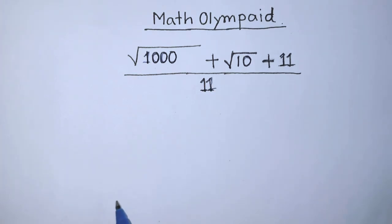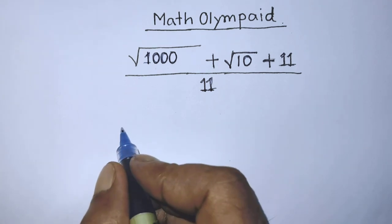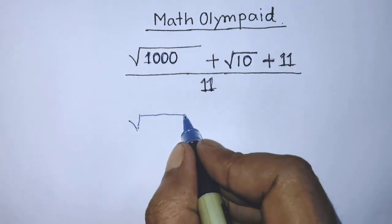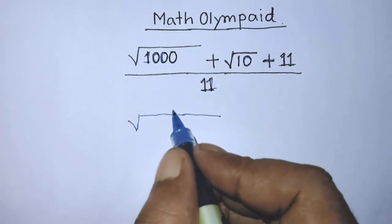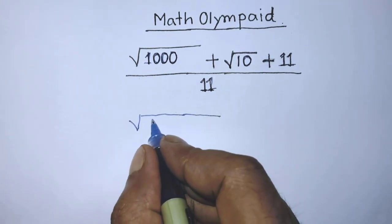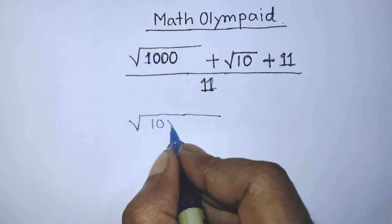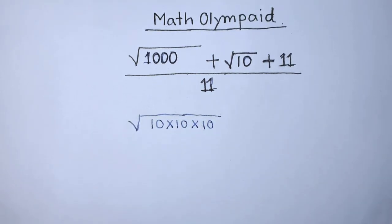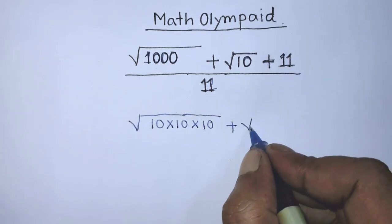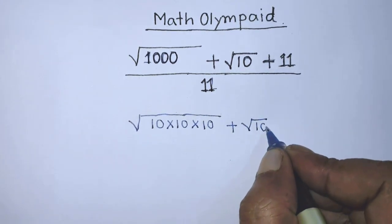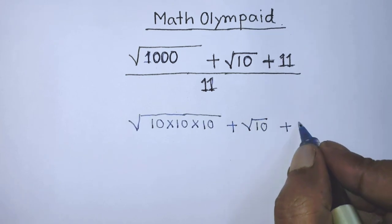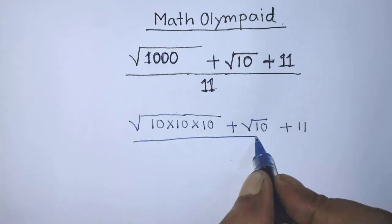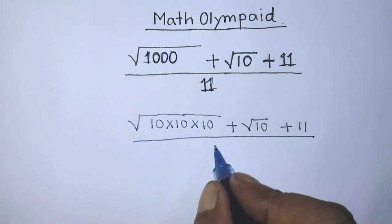In the first step of the solution, in the place of 1000 we can write 10 times 10 times 10. Then plus square root of 10, plus 11 over 11.